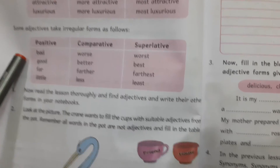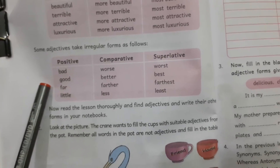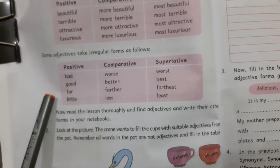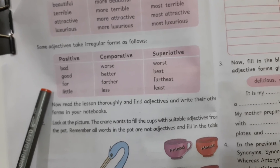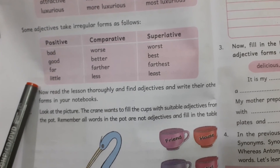Some adjectives take irregular forms. For example: good, better, best; little, less, least.